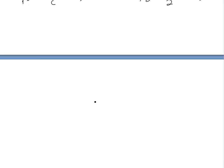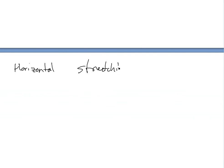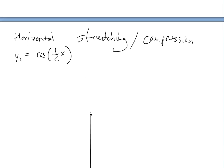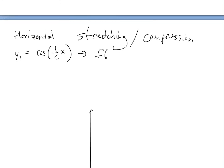Let's look at horizontal stretching and compression. For horizontal stretching, this one's a bit different — it seems like the opposite. So let's go y3. If we want to stretch it, we'll go y3 equals cosine of 1 over c times x. In general form, this is f of (1 over c) times x.